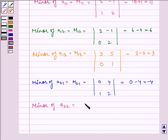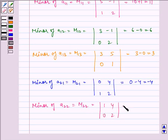Minor of A22 is equal to M22, which is equal to the determinant of 1, 0, 0, 2, which is equal to 2 minus 0, which is equal to 2.